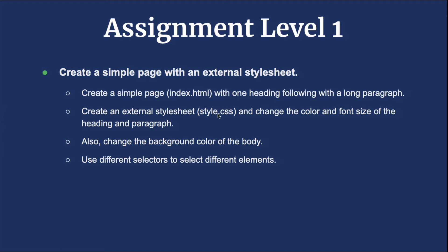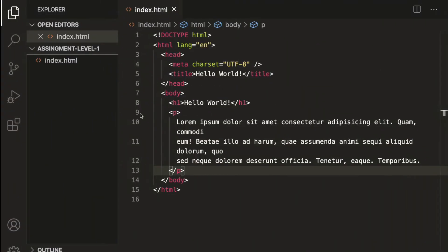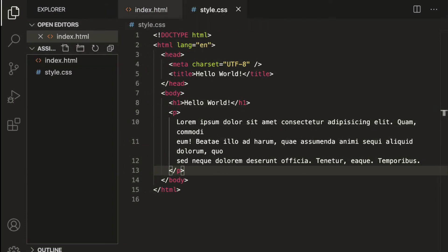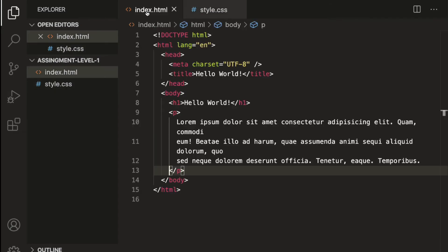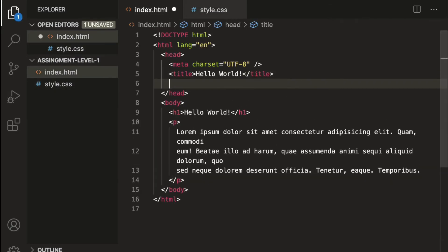Now let's see what we need to do next. We have to create an external stylesheet — style.css — and change the color as well as font size of the heading and paragraph. We also need to change the background color and use different selectors. So let's create the style.css file.